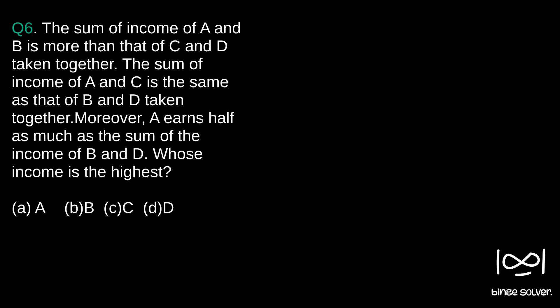Next question. Question 6. The sum of income of A and B is more than that of C and D taken together. The sum of income of A and C is the same as that of B and D taken together. Moreover, A earns half as much as the sum of the income of B and D whose income is the highest.